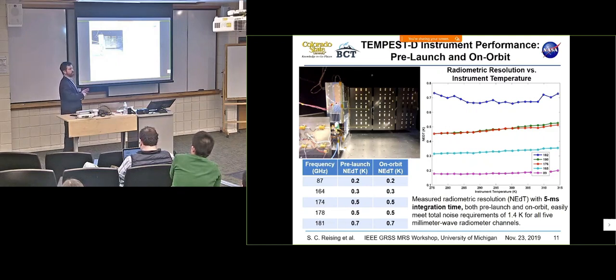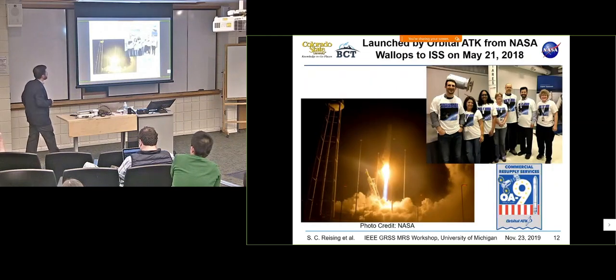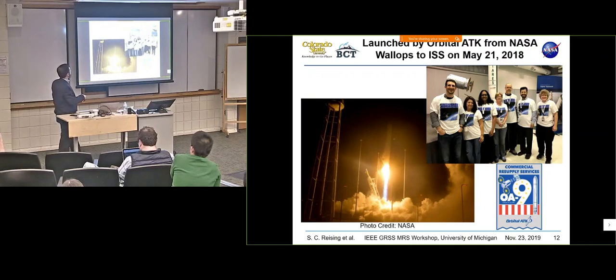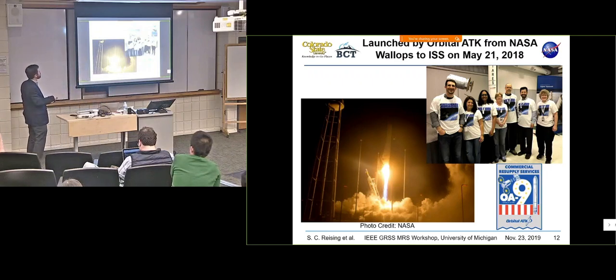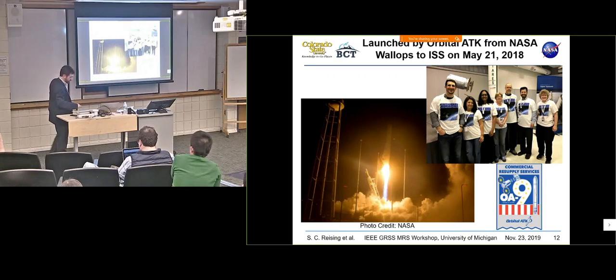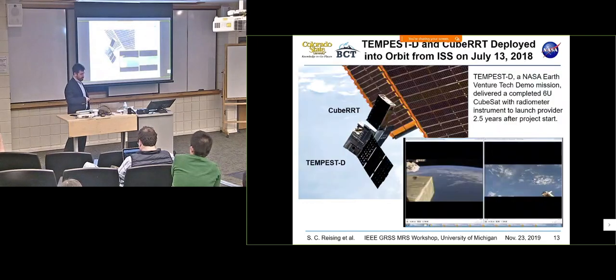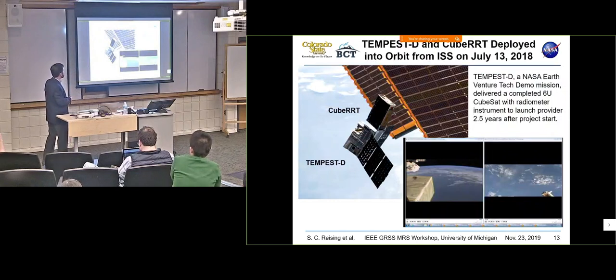It gets noisier as you get closer to the 183 gigahertz water vapor absorption line. These are very low and they compared very well with on-orbit values. I point out that we measure with five millisecond integration time. That becomes important when you compare with some of the on-orbit sensors, like MHS has 18 millisecond integration time. Because the radiometric resolution is also a function of the bandwidth.